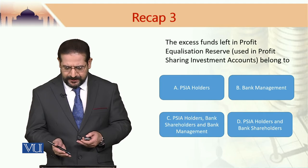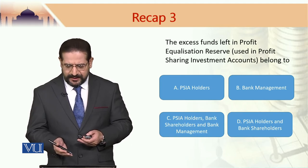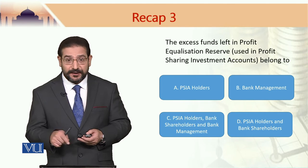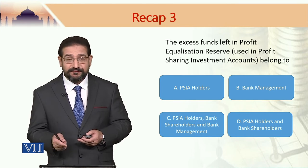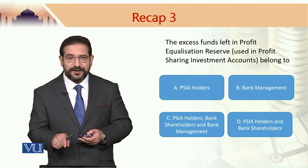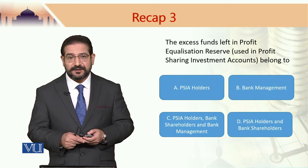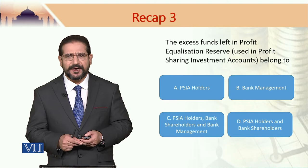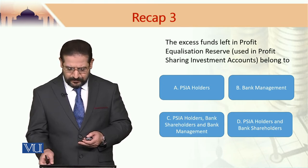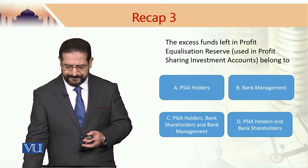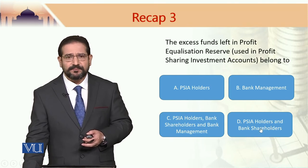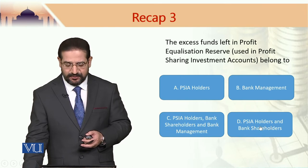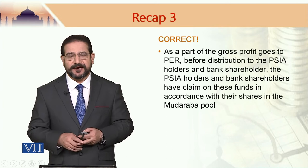Now, I would like to pick up an answer randomly. I know the answer, however, I would like to pick one of these randomly to see whether this is the correct answer. Previously I think I picked up A. Today, I would like to pick up D — profit sharing investment account holders and bank shareholders — and I click on this one. This is actually the correct answer.